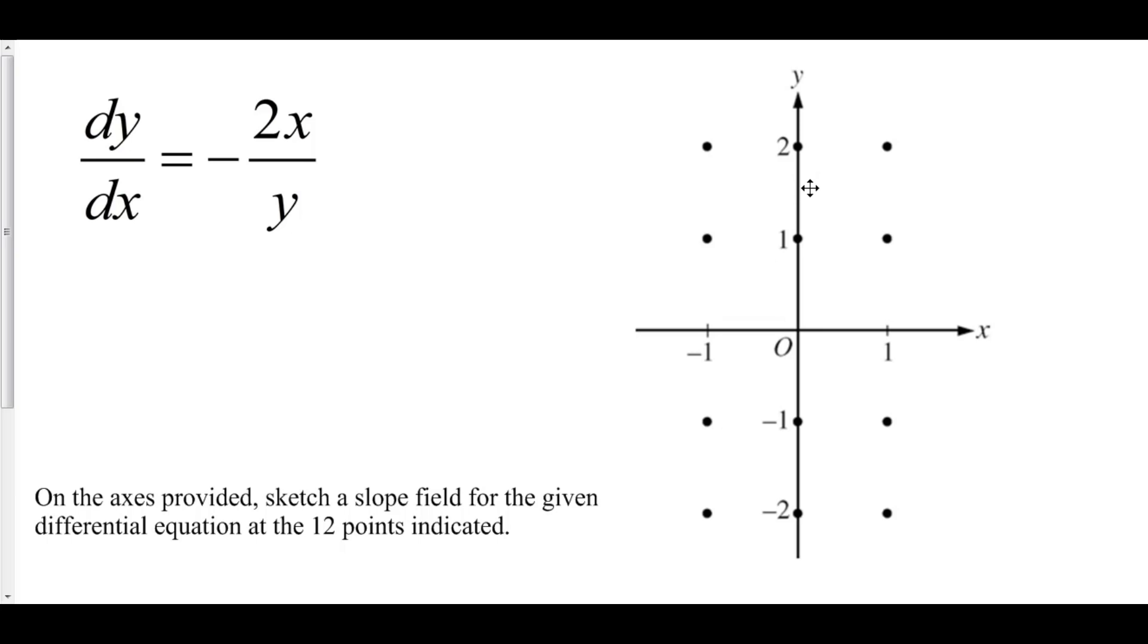Let's first start along the y-axis. So here we have (0, 1). Let's plug x equals 0 and y equals 1 in, and let's figure out what the slope might be at that particular point.